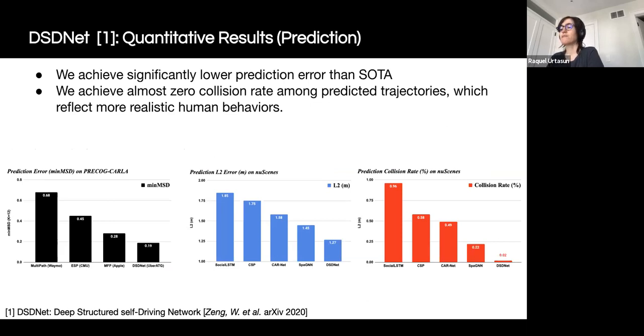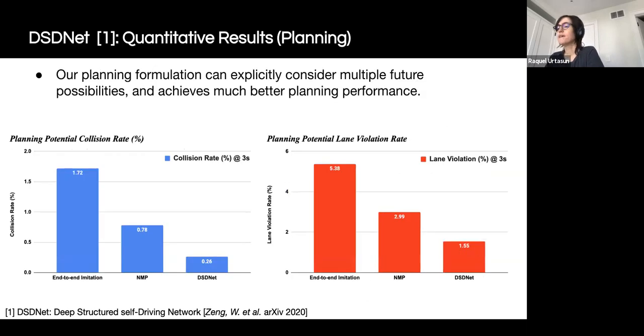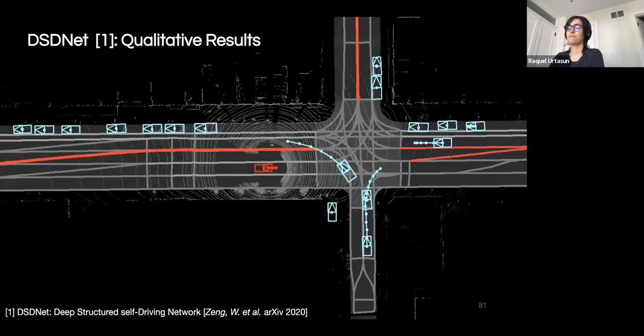Here, we show our planning results. Again, we compare against an end-to-end imitation learning method as well as our previous NMP method. Our DSD approach achieves significantly better performance in terms of collision and lane violation rates. This is due to the fact that now our model explicitly considers multiple future possibilities and then plans a safe trajectory that is compliant with other actors' future behavior.